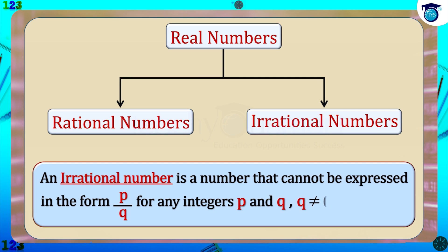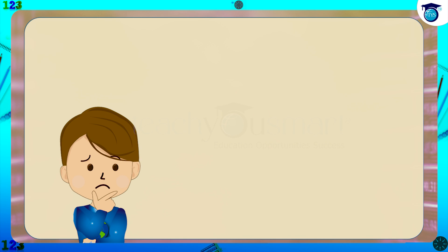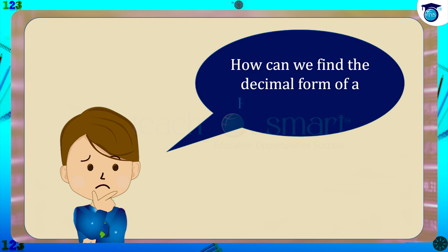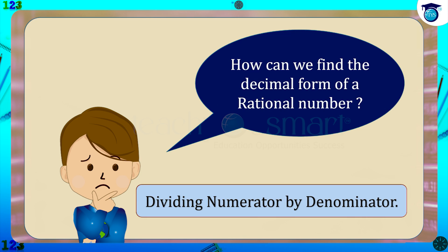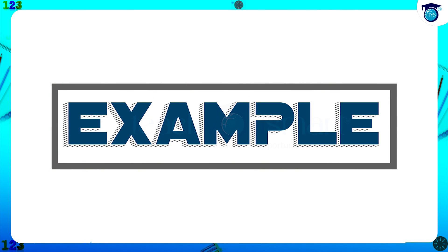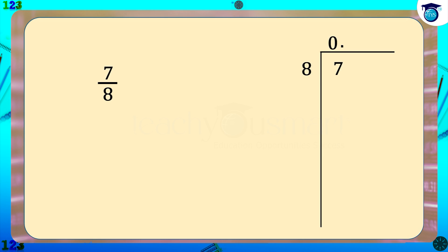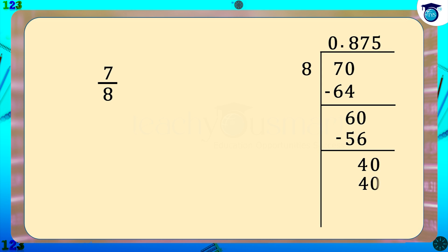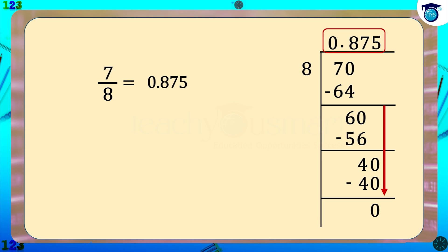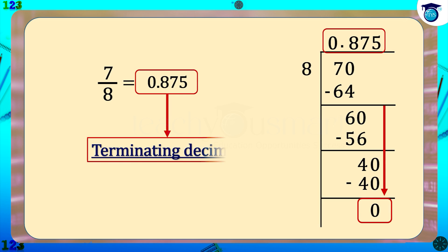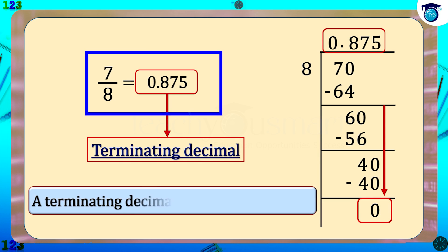Now students, how can we find the decimal form of a rational number? That is possible by dividing the numerator by the denominator. Let's see some examples. Consider 7 divided by 8. We get 7 by 8 equals 0.875. In this example we can see that the digits after the decimal point come to an end. This type of decimal is called a terminating decimal, and a terminating decimal is a rational number.